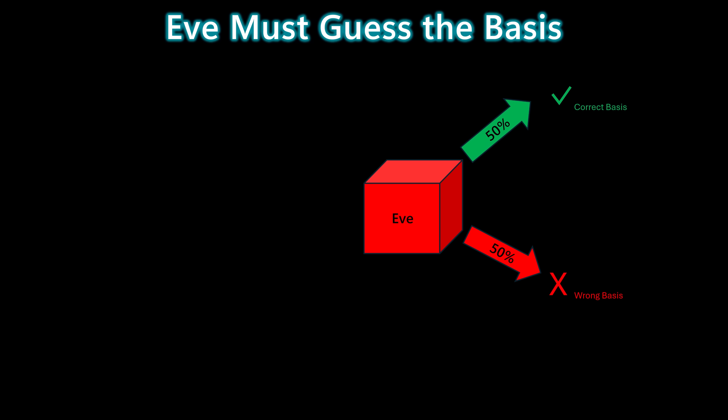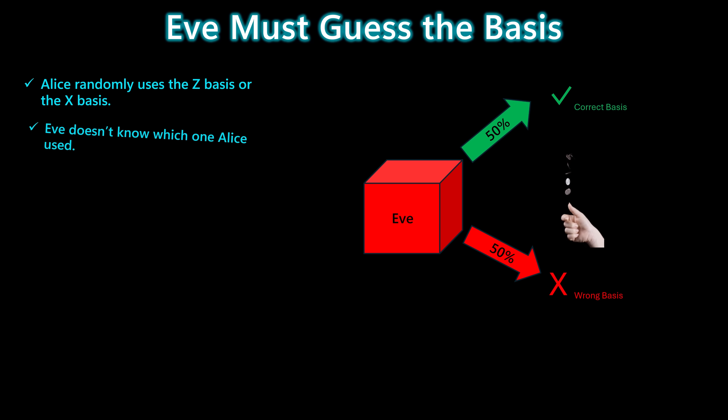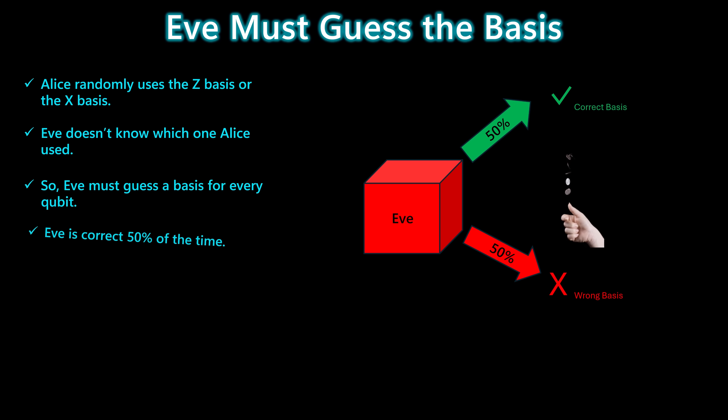Here's the fundamental challenge for Eve. Alice randomly chooses between the Z basis and the X basis, and Eve has no way of knowing which one was used for any qubit. So every time she intercepts a photon, Eve is essentially guessing. Half the time she chooses the right basis and everything looks fine. But the other half of the time she guesses the wrong basis, and that wrong guess introduces disturbance. This randomness is exactly what makes the intercept-resend attack detectable.